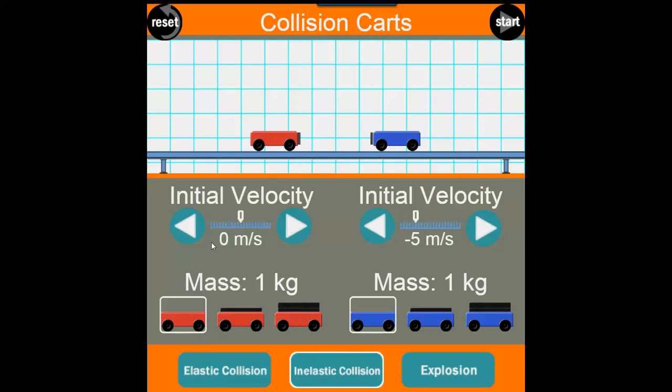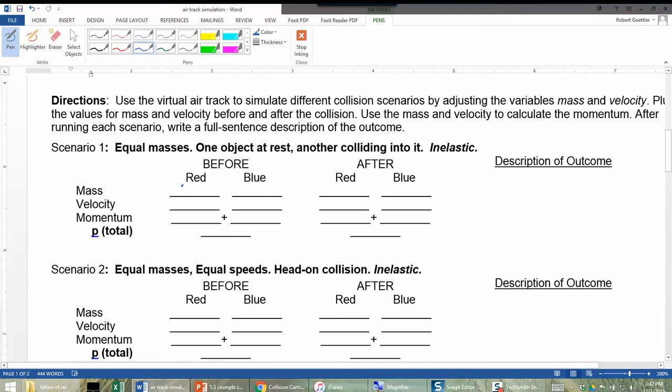So we're going to plug these numbers into the chart that's on your paper. So let's go back to that. The mass for the red object is one kilogram. The blue object is also one kilogram. The velocity for the red one is zero. And the blue one was negative five meters per second.